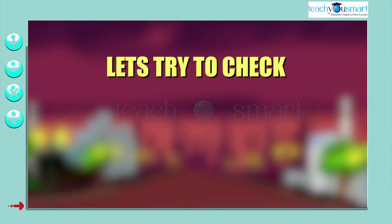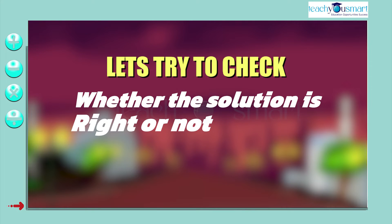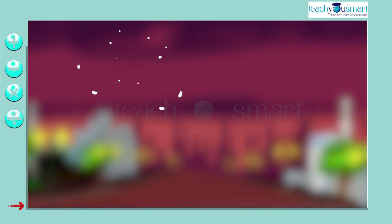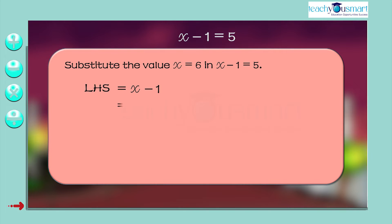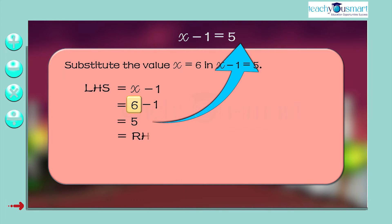Let's check whether the solution is right or not. Substitute the value x = 6 in LHS. LHS = x - 1 = 6 - 1 = 5, which equals RHS.